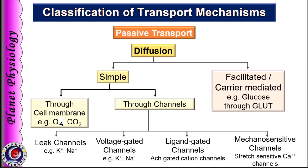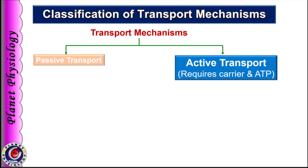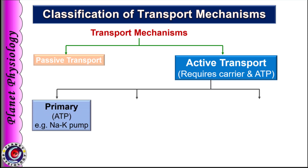So here we have completed the types of diffusion across the cell membrane, and we will study details of diffusion as well as osmosis in separate videos. Now coming to active transport: active transport moves substances against the gradient with the help of carrier protein and metabolic energy. If the carrier operates by directly using ATP or any other metabolic energy, it is termed as primary active transport, for example the sodium-potassium pump.